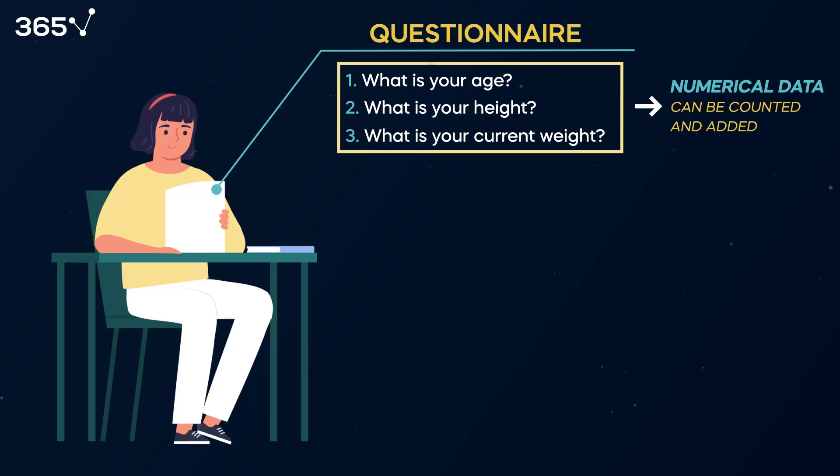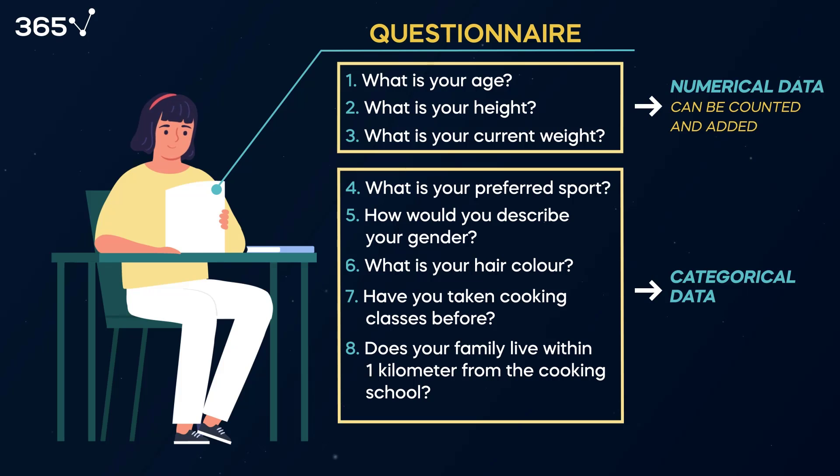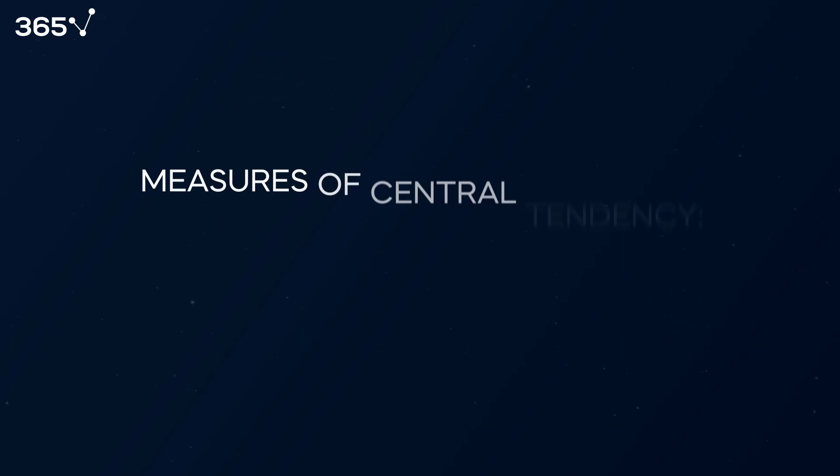On the other hand, categorical data describe groups. A student's preferred sport, gender, hair color, or eyes are categorical data. We also consider yes-no questions, such as, does your family live within one kilometer from school? Categorical data. Adding or subtracting categorical data doesn't make sense.